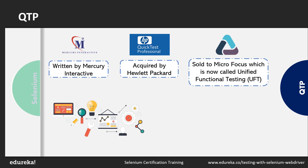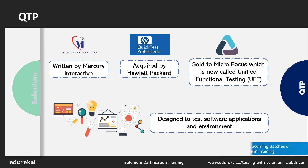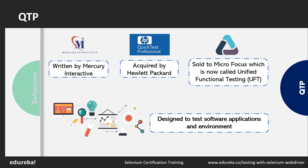QTP is designed to test various software applications and environments. It is mainly used for UI-based test case automation but can also automate non-UI test cases such as file operations and database testing. QTP uses VBScript — an active scripting language that helps in modeling Visual Basic. QTP also provides functional and regression test automation. Regression testing refers to testing the application even after modifying the source code, and QTP helps in providing quality assurance to the software under test.